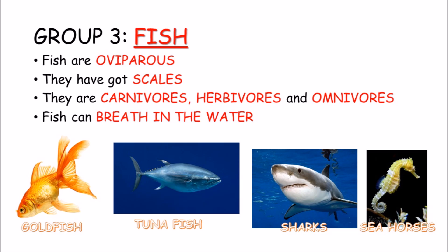Fish are oviparous. They use scales to protect their bodies. They are carnivores, herbivores and omnivores. Fish can breathe in the water. Goldfish, tuna, sharks and seahorses are fish.